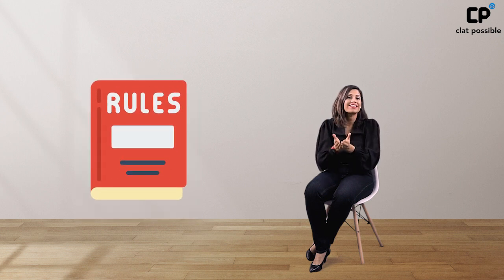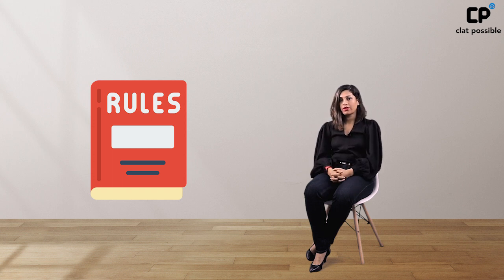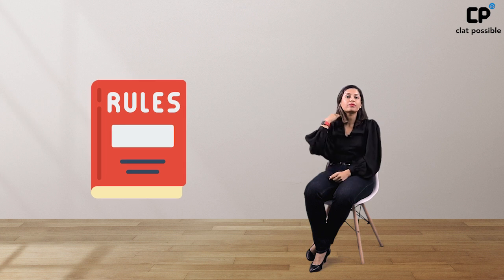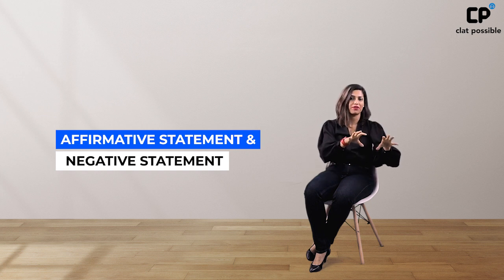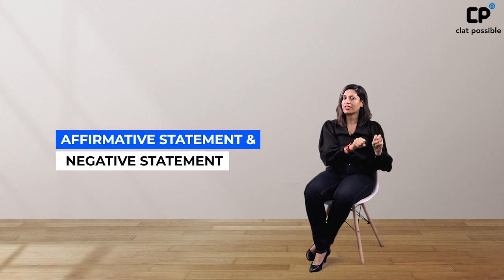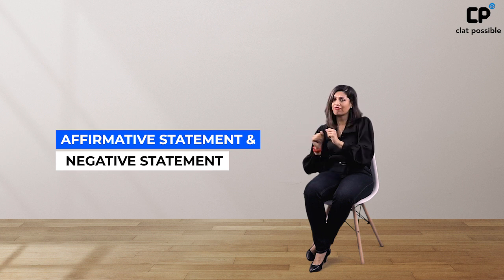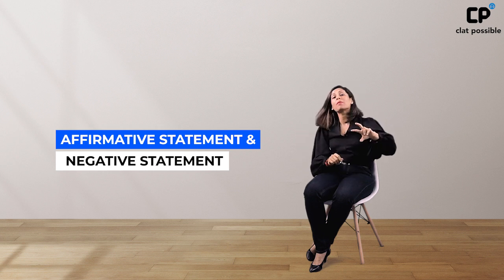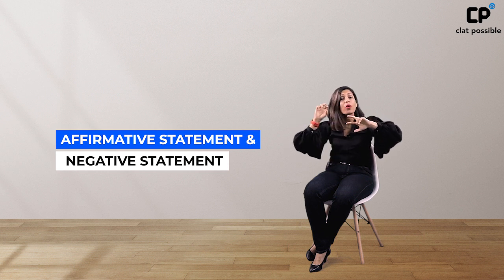Let's view deductive logic as a pre-existing set of rules. If you know those, you can simply look at the given statements and give an answer. Affirmative statements in deductive logic are those that have 'all' or 'some' quantifiers, and negative statements are those that have 'no' or 'some not' quantifiers. If you have a combination of an affirmative and a negative, then any deduced conclusion will always be negative.